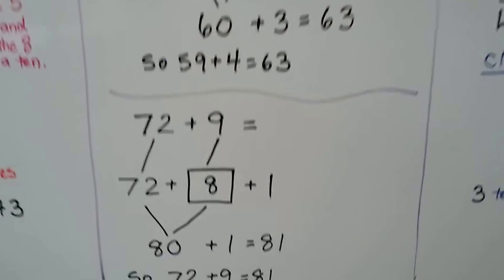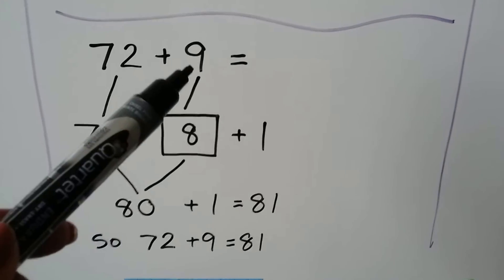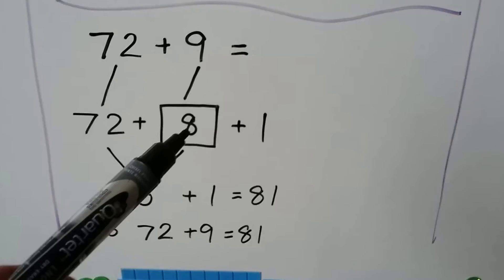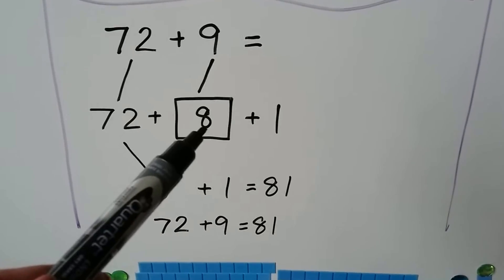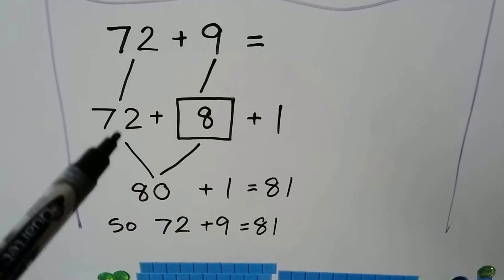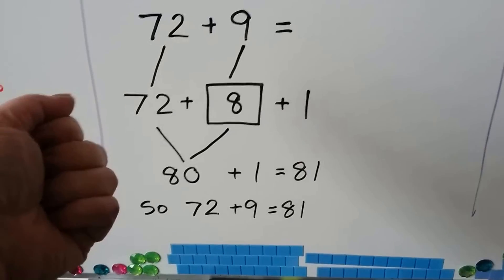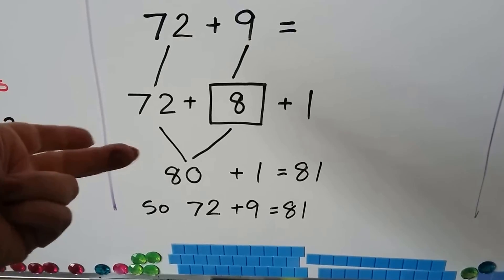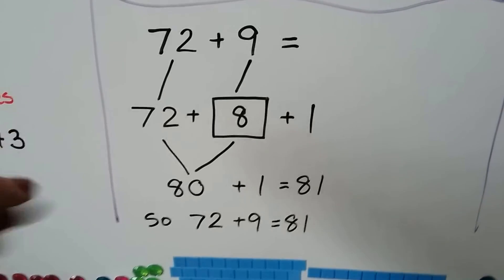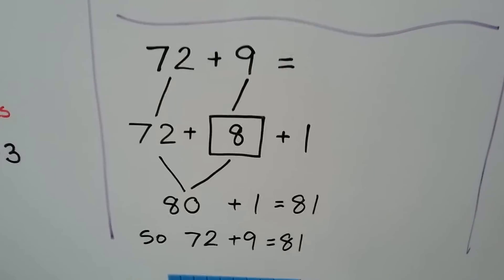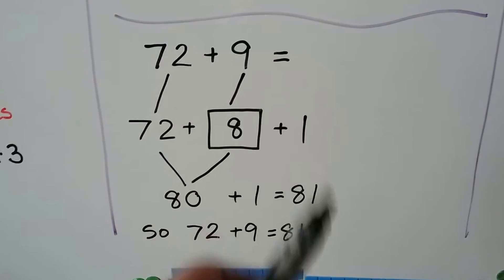Let's try another one. We have seventy-two plus nine. We can break the nine apart into an eight plus a one. We can give that eight to the seventy-two and make an eighty: seventy-two, seventy-three, seventy-four, seventy-five, seventy-six, seventy-seven, seventy-eight, seventy-nine, eighty. Seventy-two plus eight makes eighty. That makes eight tens. We have one left over from that nine.